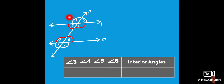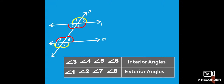Next, you can see the outside angles — that is, angles outside of these two lines. Angles 1, 2 are in yellow. Angles 7 and 8 — these four angles are outside of the two lines L and M. That name is exterior angles. So you can understand interior angles and exterior angles.